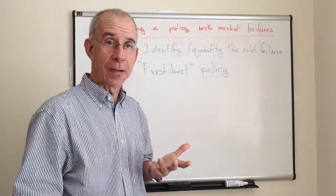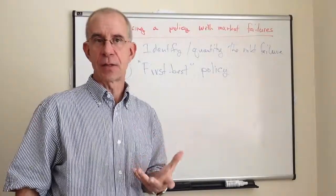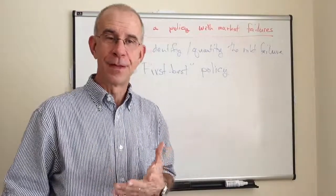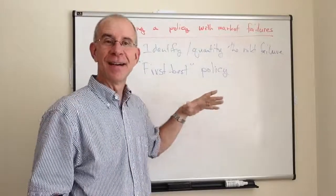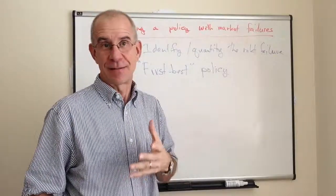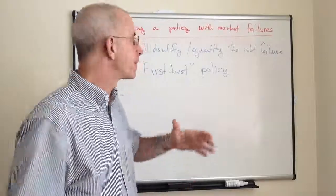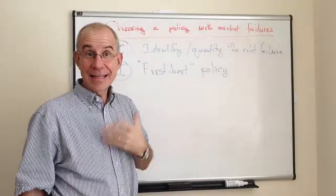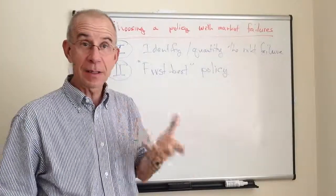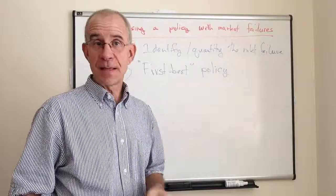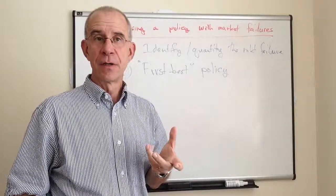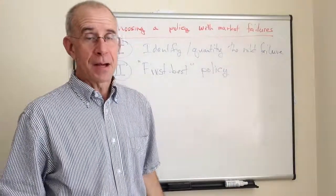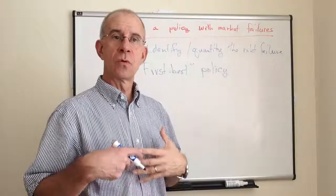Once they know that, they can potentially adjust their behavior. Now, you could also take somebody out and flog them, which is not the first-best policy, because that has a lot of unintended consequences. So once you identify the first-best policy, you then need to ask: is this administratively feasible? Is it politically feasible? Maybe this ideal solution that gets rid of the market failure may not be practically possible.